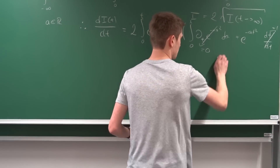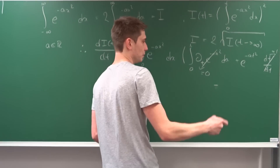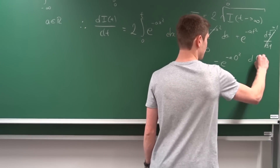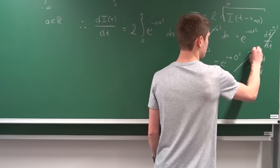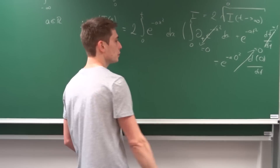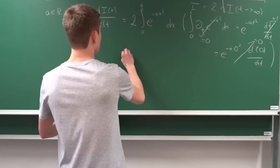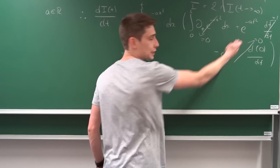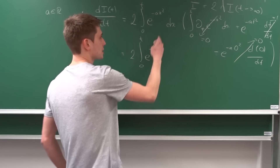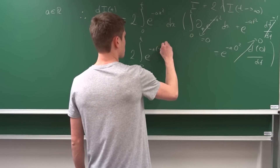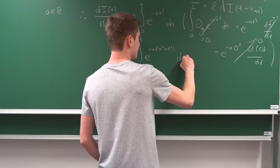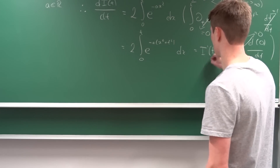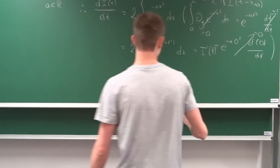We subtract the integrand evaluated at the lower bound zero, which gives e to the minus a times zero squared, but d(0)/dt is zero, so that term vanishes. What we end up with is two times the integral from zero to t of e to the minus a times (x squared plus t squared) dx. We denote this as I prime of t.